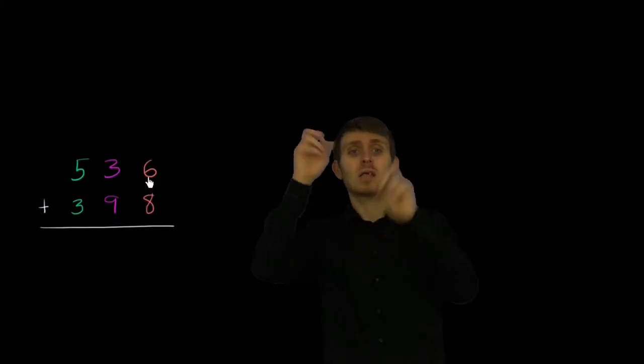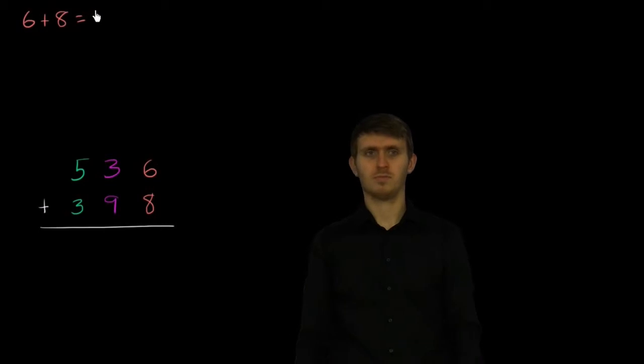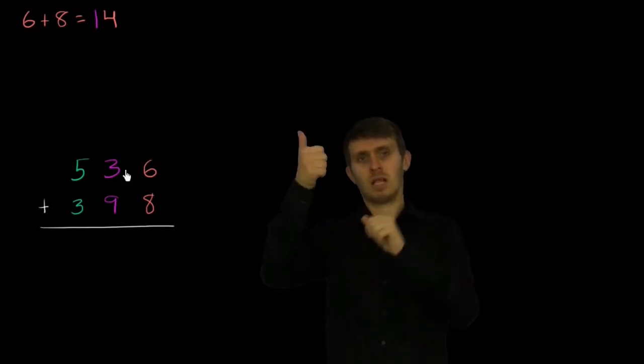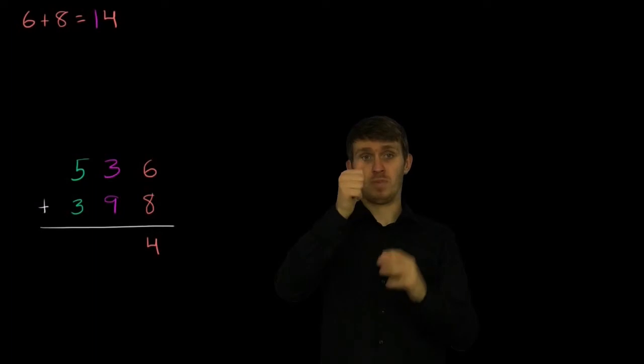We start in the ones place. We say, what's 6 plus 8? Well, we know that 6 plus 8 is equal to 14. And so when we write it down here in the sum, we could say, look, the 4 is in the ones place, so it's equal to 4 plus 1 ten. So let's write that 1 ten in the tens place.